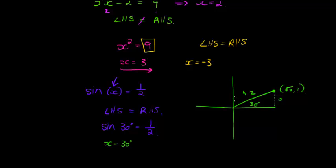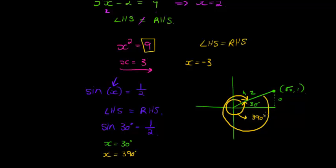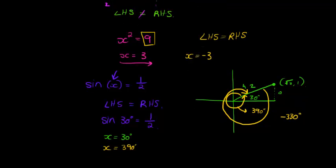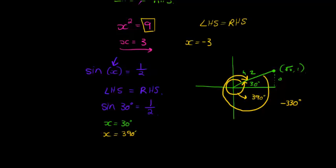Another solution comes from going right around — adding another 360 degrees, a full rotation. So at 30 degrees, add 360 degrees and we get 390 degrees, which is exactly the same triangle. So 390 degrees is another solution. What if I subtracted 360? Starting at 30 and subtracting 360 gives us negative 330 degrees, which also lands at the same position. So x equals negative 330 degrees is another solution.